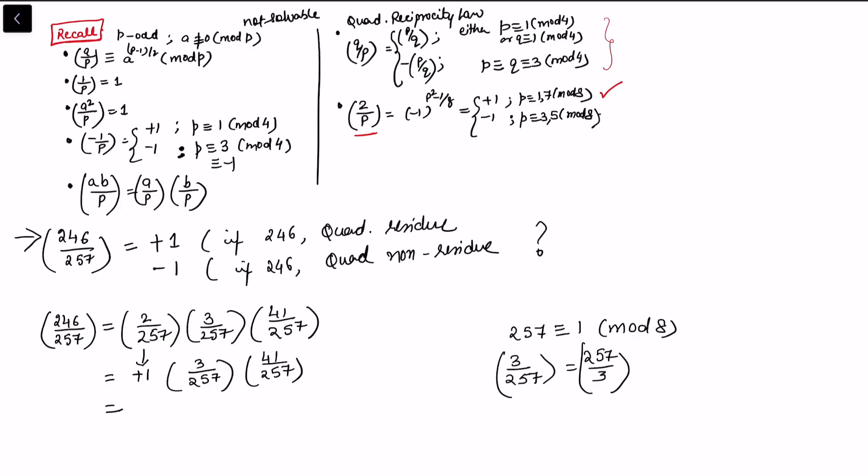But if any one of them is congruent to 1 mod 4, then you can simply take the reciprocal. 257 is congruent to 1 mod 4, so I can simply take the reciprocal and (q/p) will become (p/q). So this term is valid.